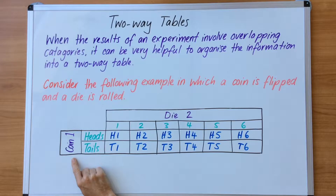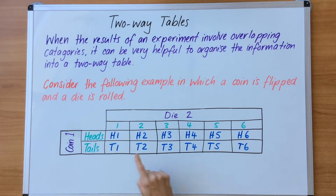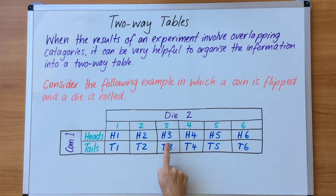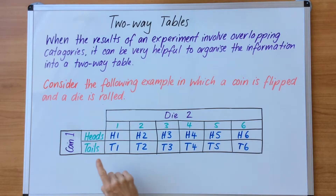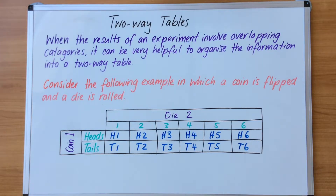Because we flip the coin first, the coin must be written first in the table. Heads and tails is written first and the die is rolled second, which is why the numbers come second. So for heads: heads and one, heads and two, heads and three, heads and four, heads and five, heads and six. The same goes for tails: tails and one through to tails and six. So we have 12 possible outcomes when you flip a coin and roll a die.